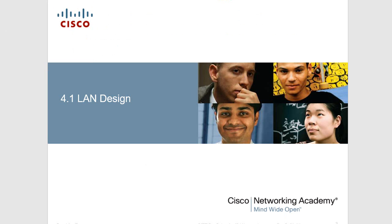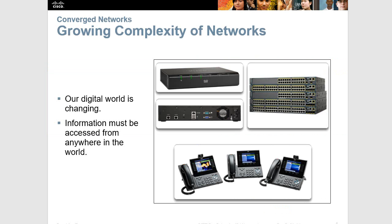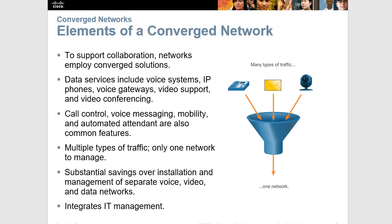Because in CCNA1 we talked about switched networks quite a bit. So we're going to start off with local area network design. This slide is just talking about the growing complexity of networks — where you don't have a single office or building that your network is isolated to, your employees don't need to be on site to access the network, and your information must have the capability of being accessed anywhere in the world. We also have the idea of a converged network where you have all different types of data being sent along the same network, and you need to keep those conversations separate and in order — we talked about that in CCNA1 through different protocols.